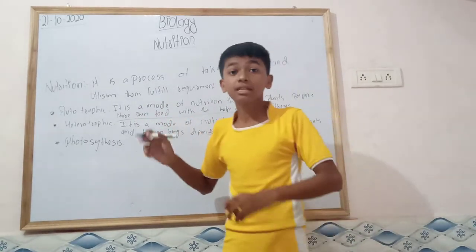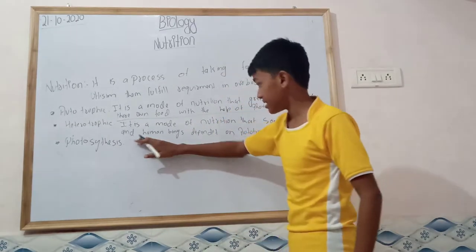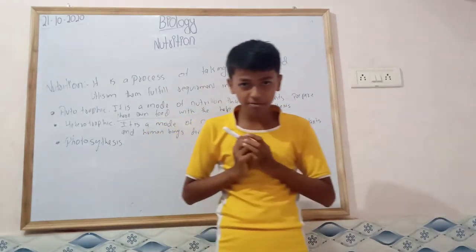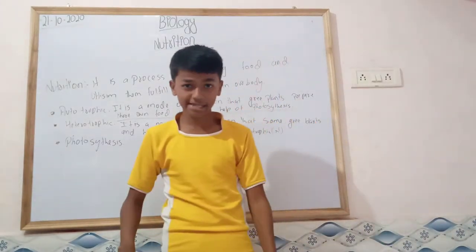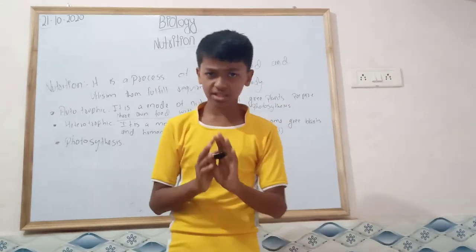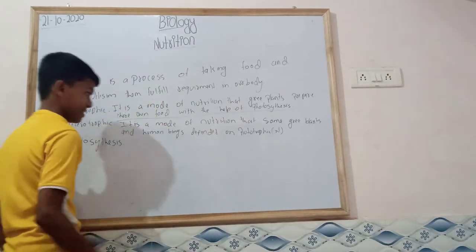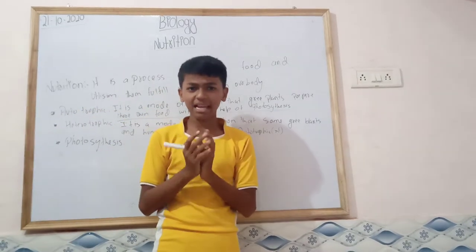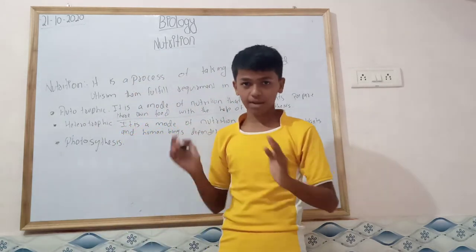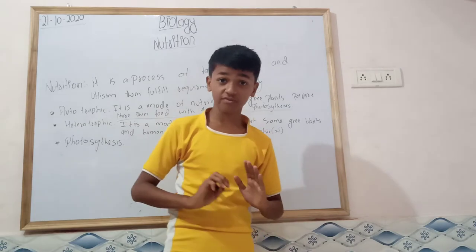Autotrophic means the organism prepares its own food. It self-prepares its own food and eats it. We cannot prepare our own food by ourselves. Foods like mango and other such things give nutrition, but we cannot prepare our own food on our own.